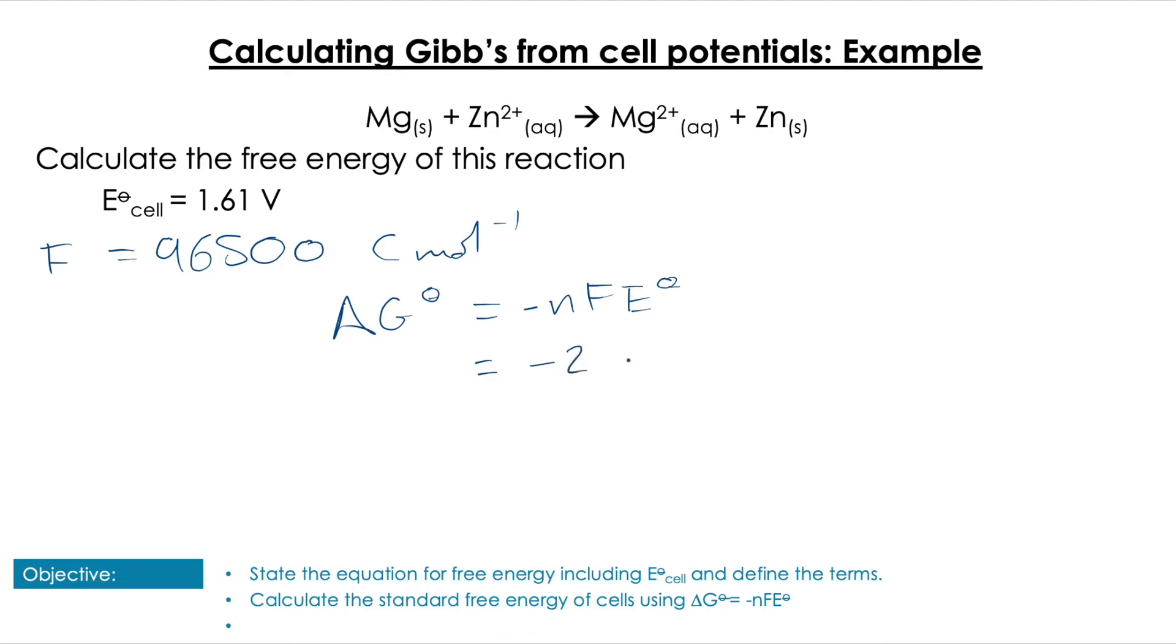You could write out the half equations if you couldn't see that straight from the equation above. Then you just plug in the values that the question's given you for the E°cell value, which gives us -310,730 joules, which is -310.73 kilojoules.